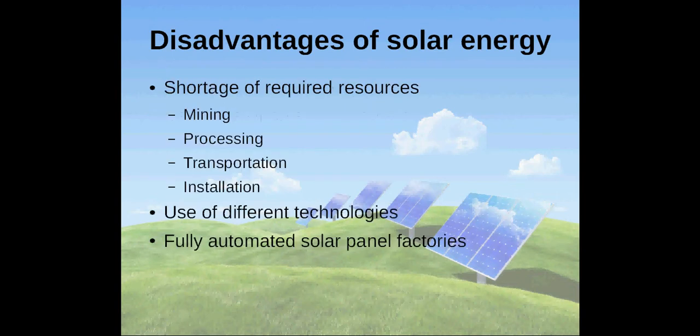One problem could be a shortage of required resources. Silicon, the major component of solar panels, is not really a scarce resource. But there is a long way for silicon to become a solar panel. It has to be mined, processed and combined with other materials. A solar panel and its components need to be transported and set up for the end user.